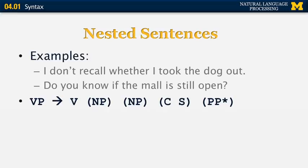The new rule is: a verb phrase produces a verb followed by zero, one, or two noun phrases, and then an optional sequence of C — a conjunction — followed by S, an entire new sentence. We again have recursion: the general rule was S goes to NPVP, and now VP can produce an S. We can recursively alternate between S and VP to produce arbitrarily long sentences.